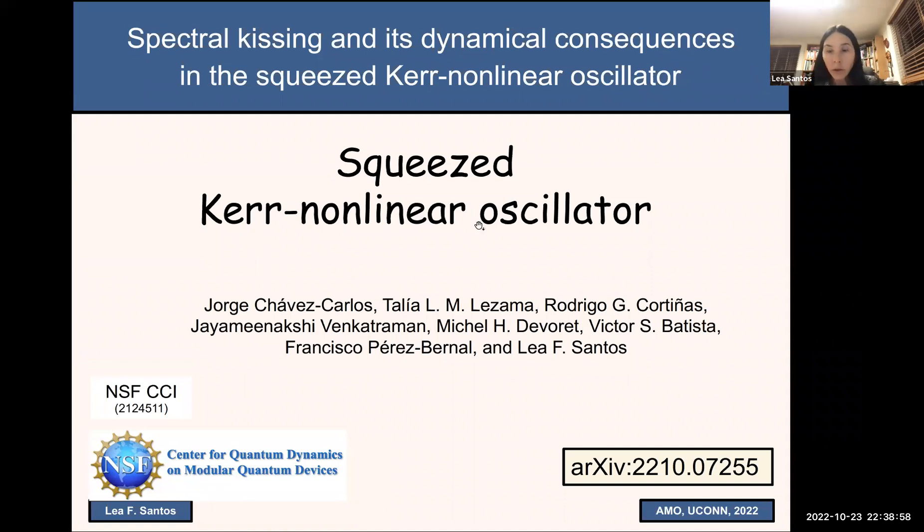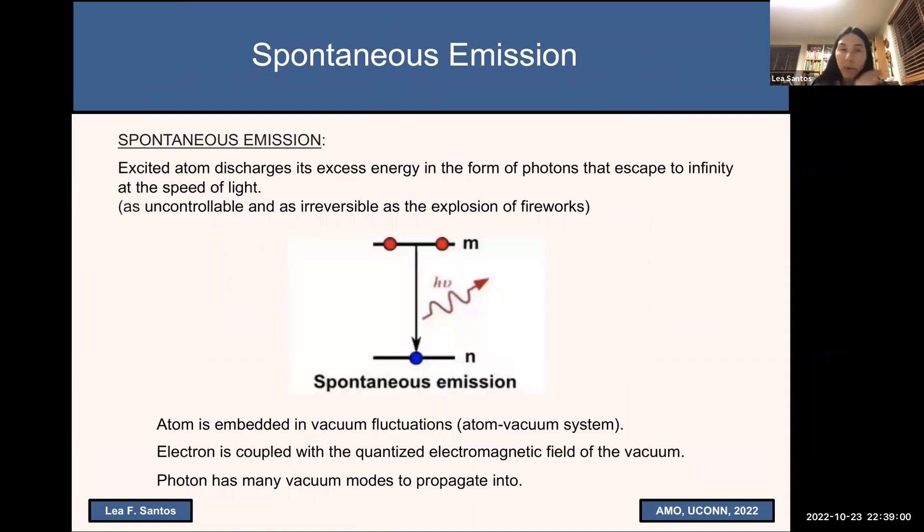And we are going to start talking about spontaneous emission. As you know, when we have an atom that is excited, it's not going to stay there forever. It will eventually get rid of this excess of energy in the form of photons. So this process is irreversible, this process is uncontrollable.